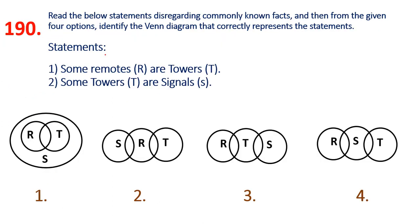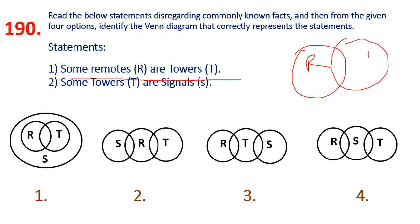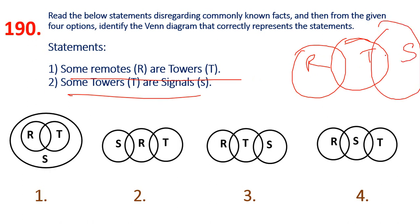190th question: Venn diagram. Some remotes are towers; some towers are signals. It is already R and T related. If you give the signals touching R only through T, because some towers are signals, R only touches through T. There is R, S, O — that is option 3. Option 3 is the answer.